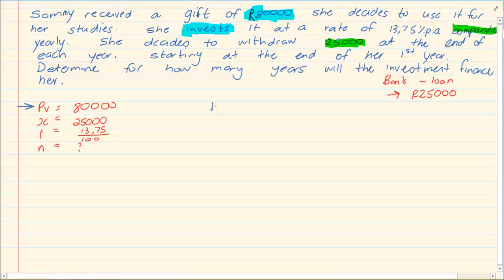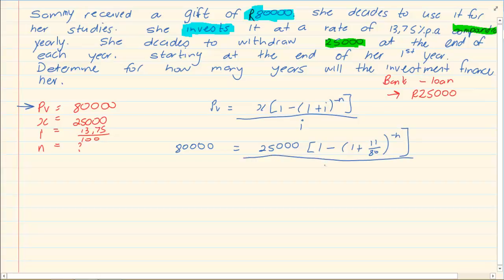Now, let's go to our formula. Substitute what we have. We have x. I prefer simplifying my fractions. I've got 11 over 80 to the power of minus n all over 11 over 80.